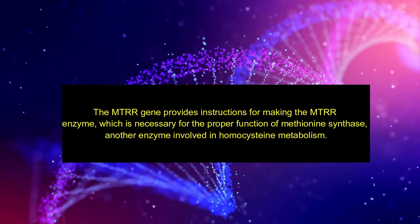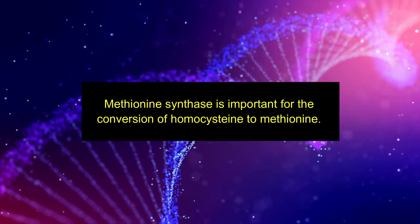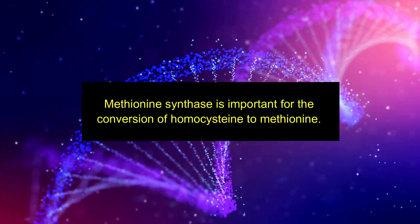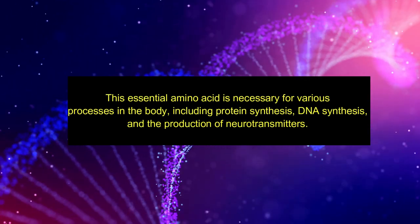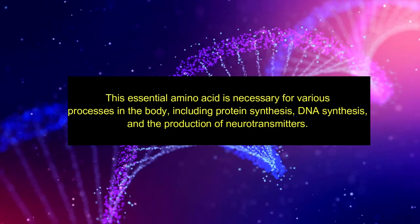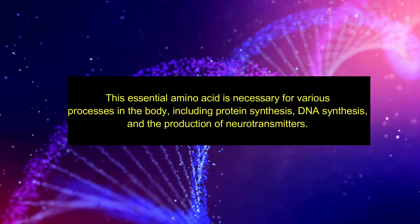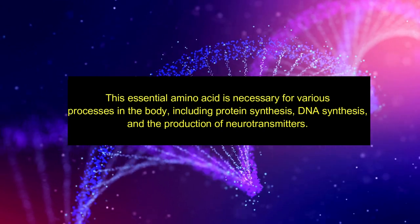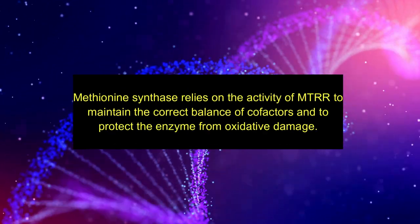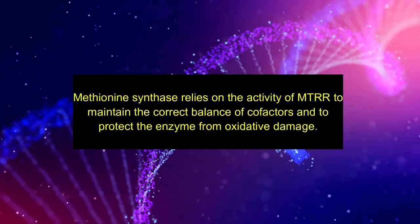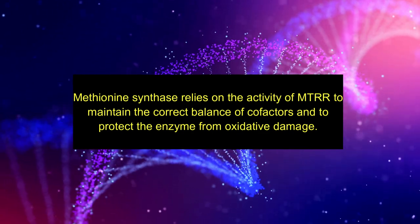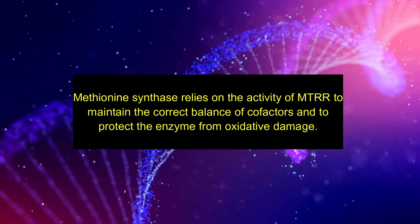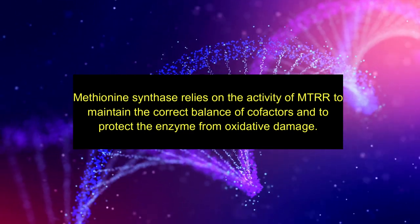Methionine synthase is important for the conversion of homocysteine to methionine. This essential amino acid is necessary for various processes in the body, including protein synthesis, DNA synthesis, and the production of neurotransmitters. Methionine synthase relies on the activity of MTRR to maintain the correct balance of cofactors and to protect the enzyme from oxidative damage.